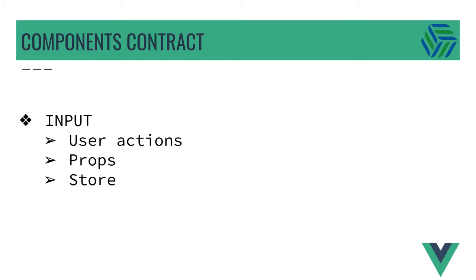The component contract is the interface of the component — a contract that says if you give me this input, I'm going to give you this output. So in our tests, we simplify the process and we only focus on the input and the output to test our components. The input of a component could be a user action such as a click on a button, the props that we pass down to components, or providing a store used by a component with the correct data.